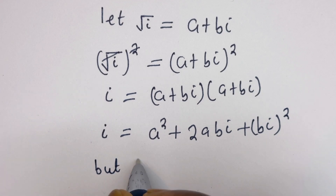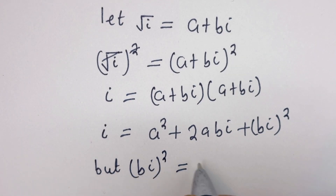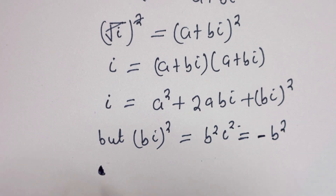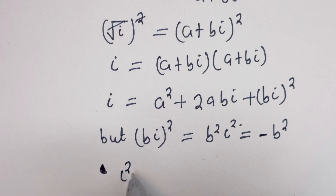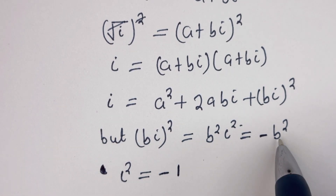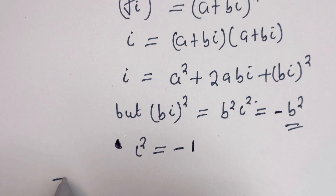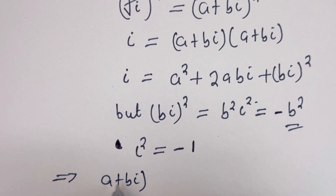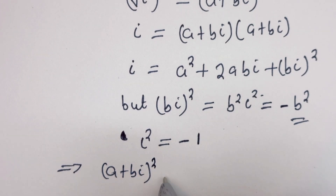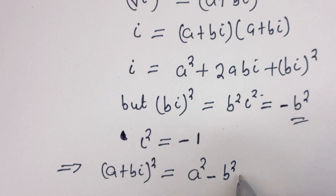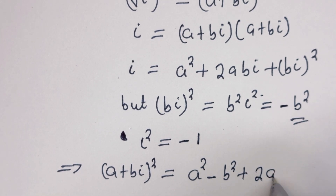Now, bi all squared is equal to b squared times i squared, which is equal to minus b squared, because i squared is equal to minus 1. So that is how we get minus b squared. Therefore, a plus bi all squared is equal to a squared minus b squared plus 2abi.